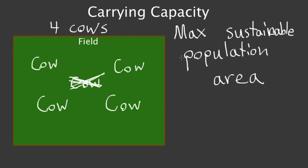So the maximum sustainable population for this area is four cows, and that's the carrying capacity. Hope that helped you out.